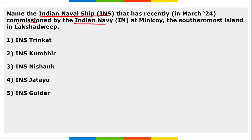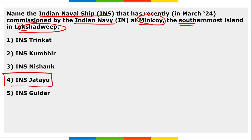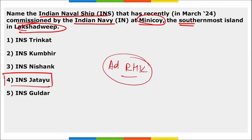Next: name the Indian Naval Ship recently commissioned by the Indian Navy at Minicoy, the southernmost island of Lakshadweep. It is INS Jatayu. INS Jatayu was commissioned by Indian Navy at Minicoy Island in Lakshadweep. It was commissioned by Admiral R. Hari Kumar, who is our Chief of Naval Staff.